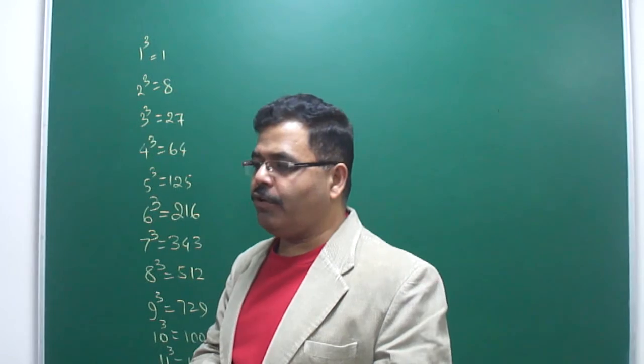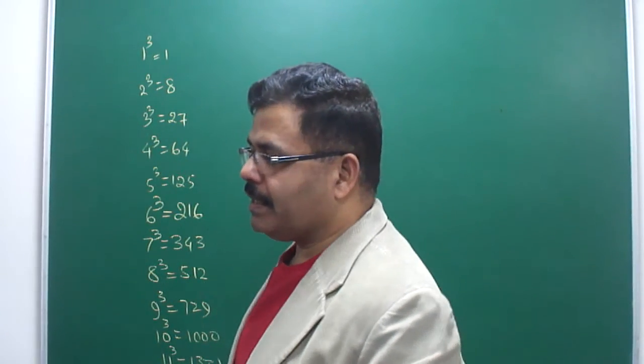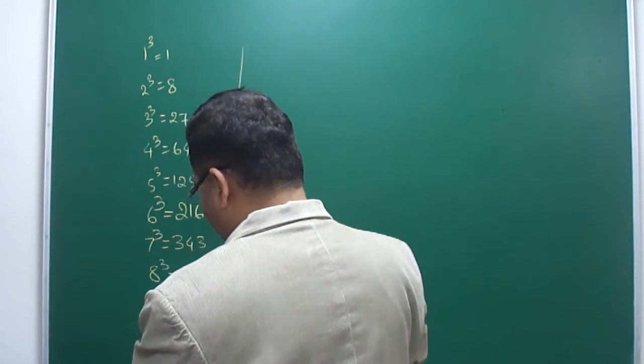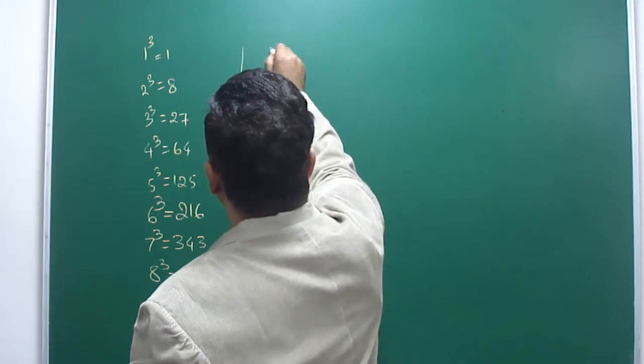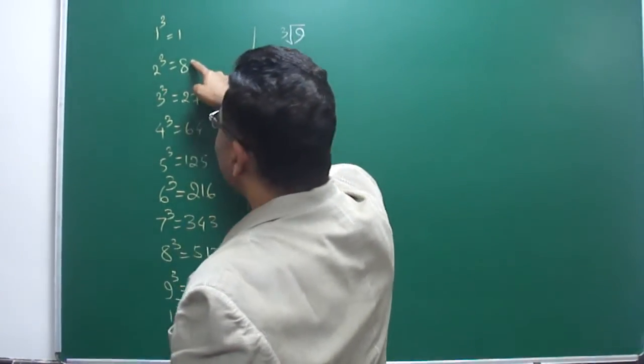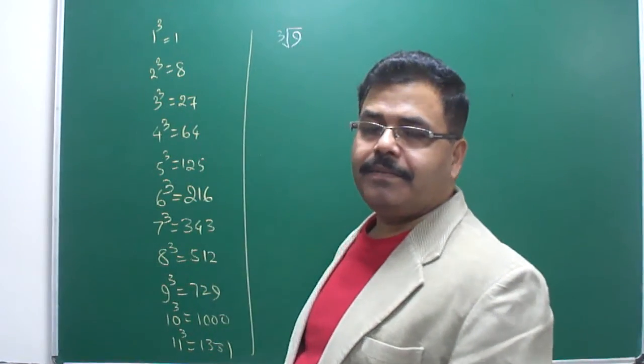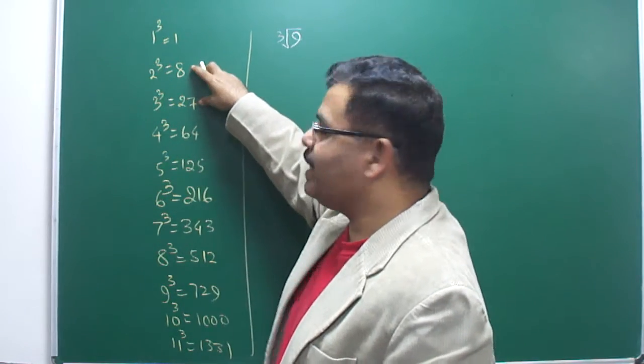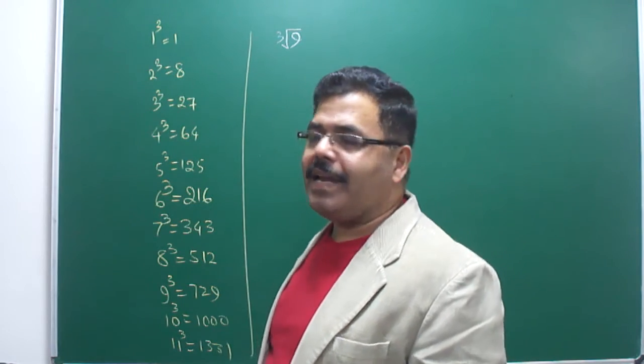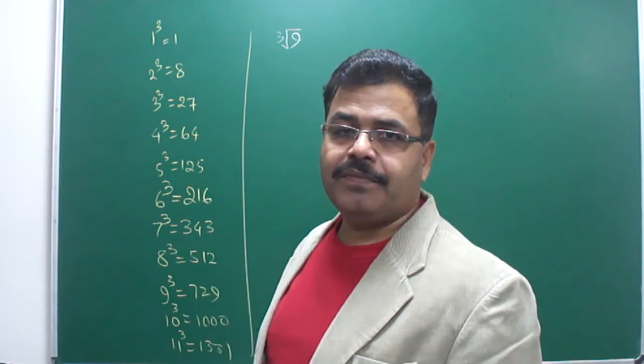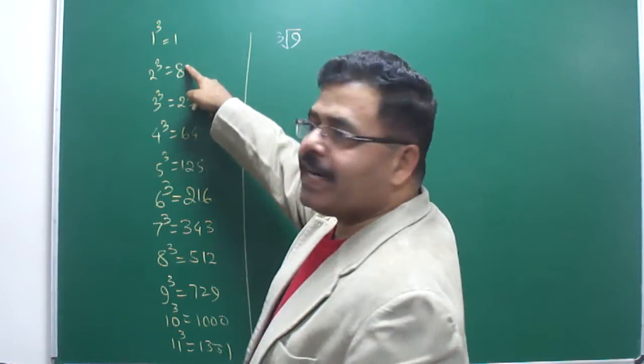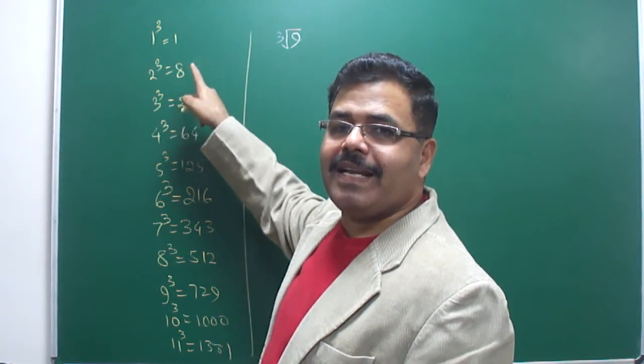Cube root of 9: this number is more than 8 and less than 27. So 9 lies in the range of 8 and 27. Therefore, cube root of 9 must lie between 2 and 3. It will be certainly more than 2 and less than 3.